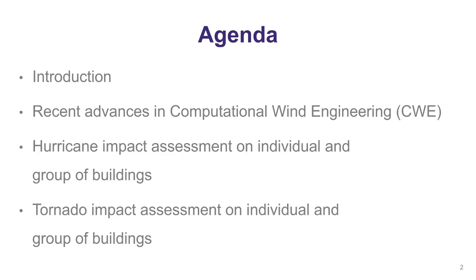I have brought two examples. One focused on hurricane impact assessment, both on individual buildings and groups of buildings or neighborhoods, and the other is a tornado impact assessment featuring the Dunrobin tornado. As we all remember, last year a tornado touched down in our capital, and one of the communities near Ottawa that was hit is Dunrobin, and we'll see our tornado simulation for that community.